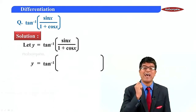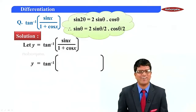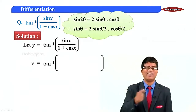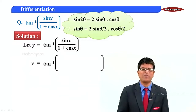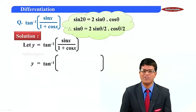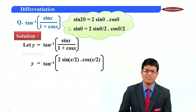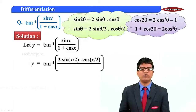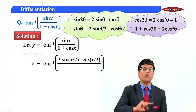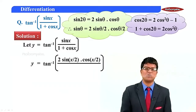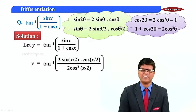Sine x can be written using the formula sin 2θ = 2 sin θ cos θ, so sine x equals 2 sin(x/2) cos(x/2). For 1 plus cos x, we use the formula cos 2θ = 2cos²θ − 1, which gives 1 plus cos 2θ = 2cos²θ. Therefore 1 plus cos x equals 2cos²(x/2). The 2s cancel out.